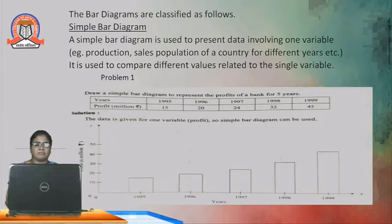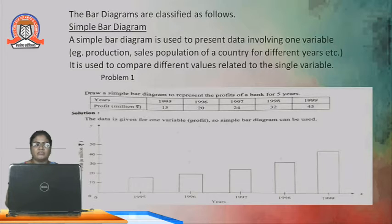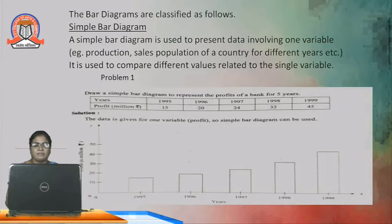Here is one example — a simple bar diagram. The data gives years and profit in millions: 1995, 1996, 1997, 1998, 1999 — plotted on the X axis. For the Y axis, the profit in millions — 15, 20, 25, 30 to 45 — is plotted. By drawing bars to the corresponding heights on the Y axis, we get the bar diagram. Note: in a histogram, continuous bars are used, but in a bar diagram there are gaps between the bars.